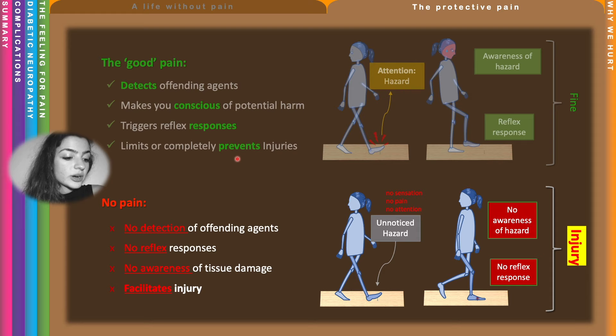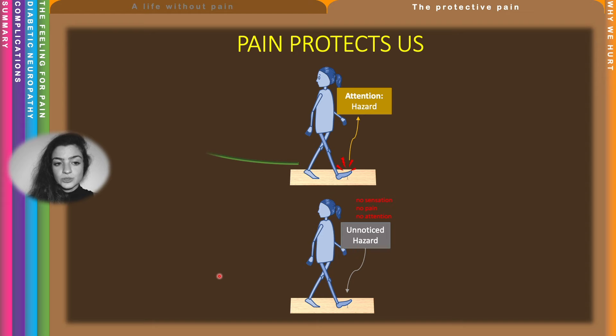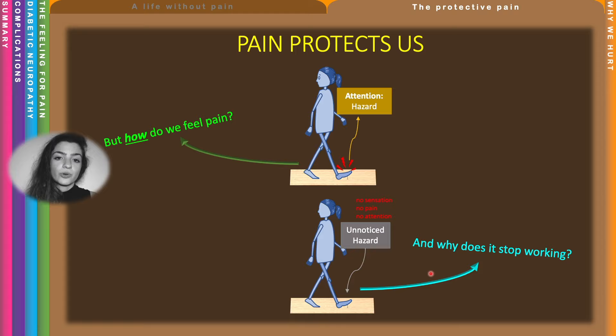So pain protects us — we've seen that. But how do we feel pain? That's what we're going to see next, and then why does it stop working in diabetes?